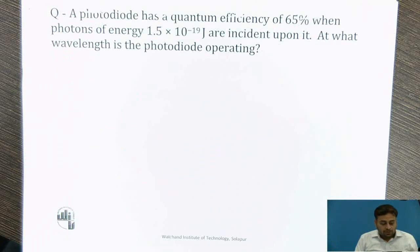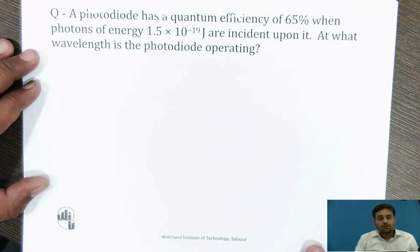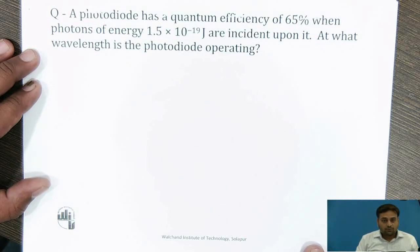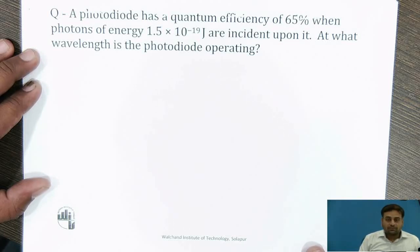We will solve another example. A photodiode has a quantum efficiency of 65% when photons of energy 1.5 × 10⁻¹⁹ joule are incident upon it. At what wavelength is the photodiode operating? Here we are asked to find out the operating wavelength of a photodiode with quantum efficiency of 65% and photon energy of 1.5 × 10⁻¹⁹ joules.